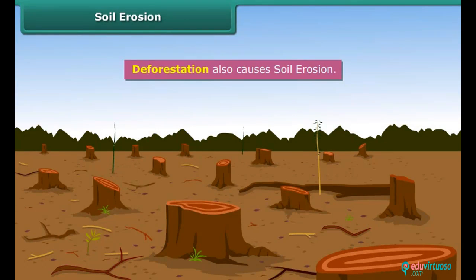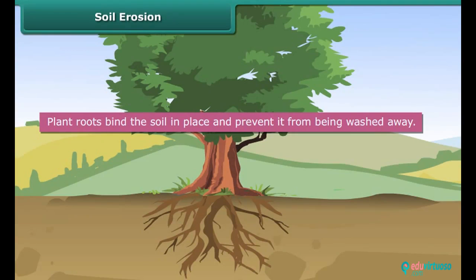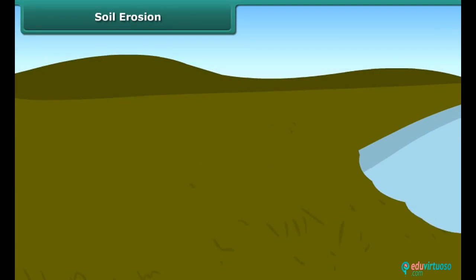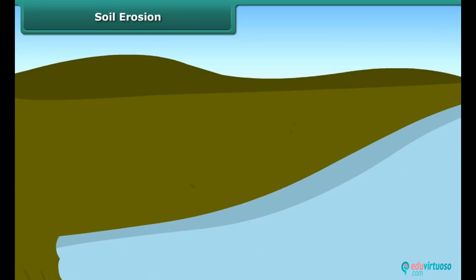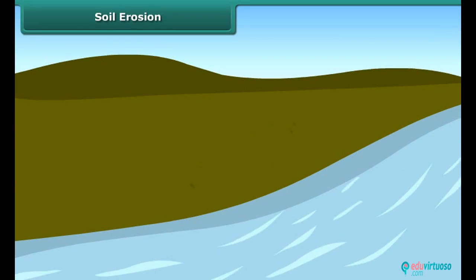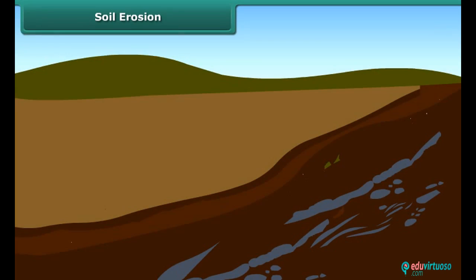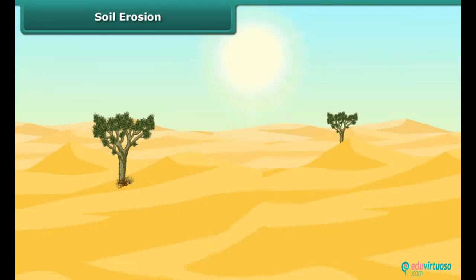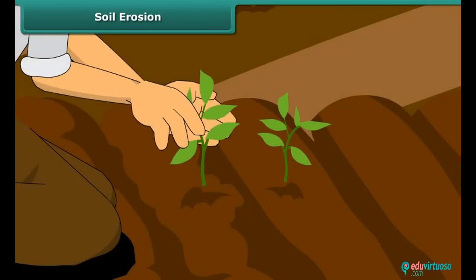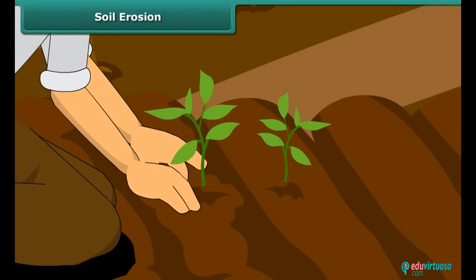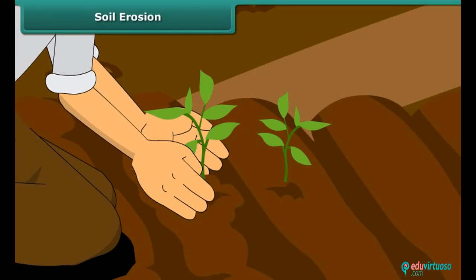But how? Plant roots bind the soil in place and prevent it from being washed away. So if there are no trees, floods will occur which will leach the soil nutrients and eventually the land will become barren, which cannot be used for vegetation. Therefore, more trees should be planted in order to prevent soil erosion.